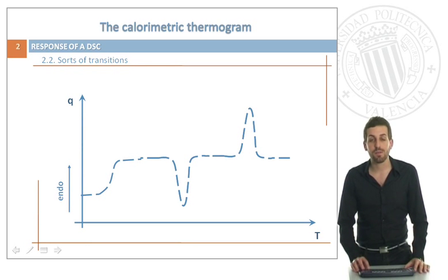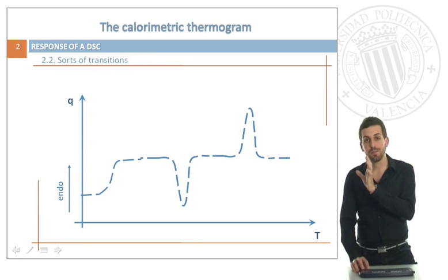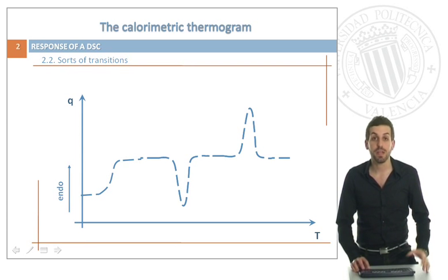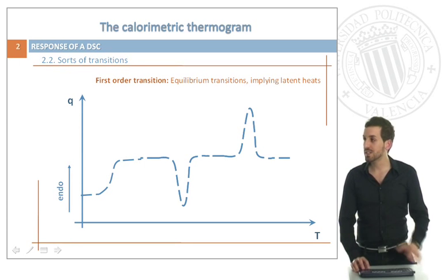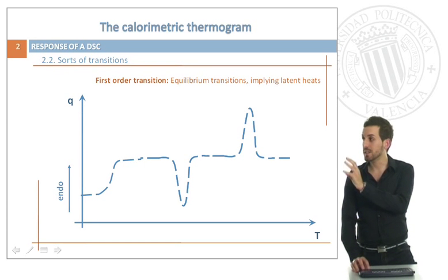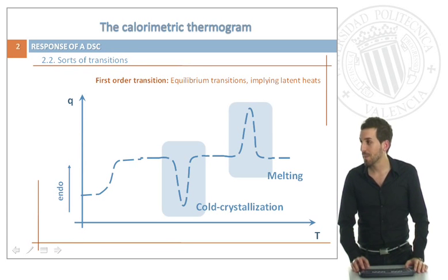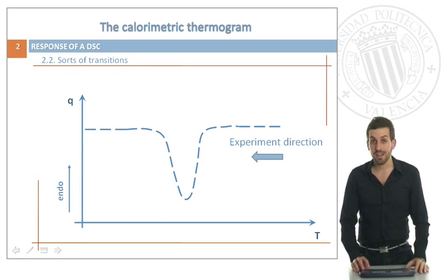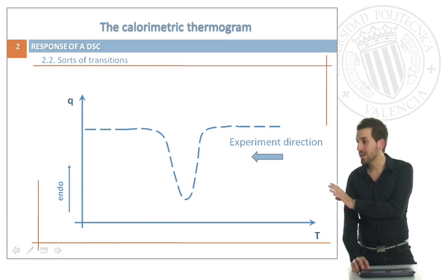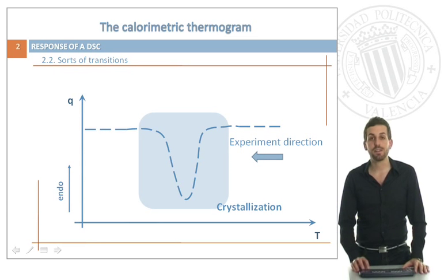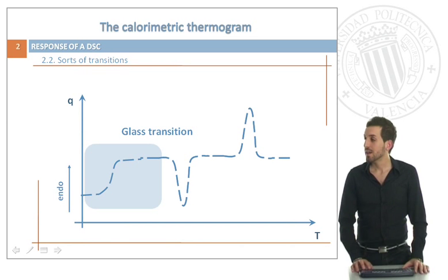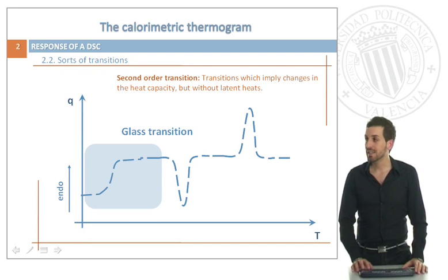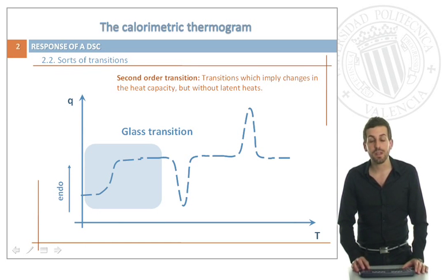Let's start with the response of our DSC. We have chosen a thermoplastic polymer because it will give us the most information. First, we will see the first-order transitions, which are equilibrium transitions in which latent heats are implied. For example, in the heating scan we can see cold crystallization and melting. In the cooling scan, the experiment direction goes from higher to lower temperatures and we can see the crystallization. Regarding the increase in heat capacity, this is a second-order transition and does not imply latent heat — only variations in heat capacity. In that case, it is the glass transition that we are seeing.